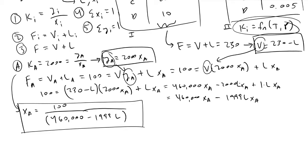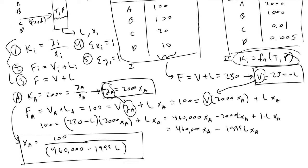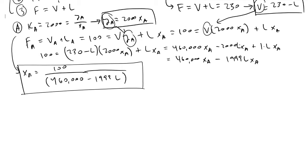We've arrived at a function that tells us how x_a depends on the liquid flow rate L using our five equations. You can solve for variables B, C, and D by hand similarly. I've already done this, so for x_b we get 100 divided by (230,000 - 999 times L).